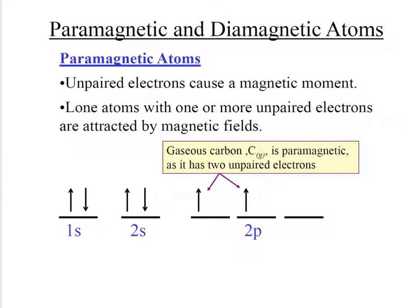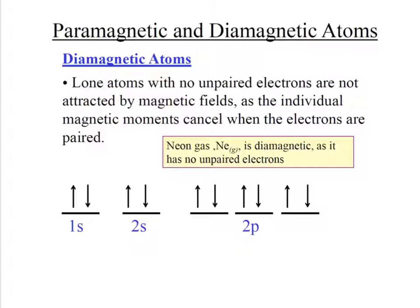Paramagnetic and diamagnetic. Paramagnetic electrons are unpaired electrons, and they cause a magnetic moment. The net magnetic moment in the atom will interact with a magnetic field, which results in an attraction to that field. Diamagnetic means everybody's paired up. No unpaired electrons, so there's no magnetic moment.